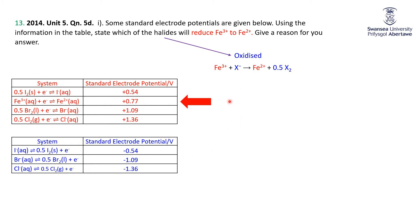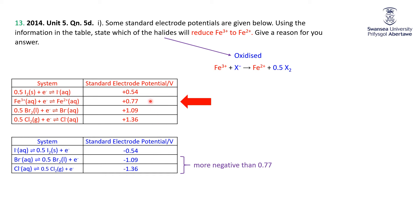Now we can put the reduction half equation potential for Fe3+ together with the halide oxidation potentials to give us the overall cell potential. We want to know which halides give a positive overall potential. The oxidation potentials are all negative and cannot be more negative than minus 0.77, because once they become more negative than that, the overall potential becomes negative. Bromide and chloride are more negative than minus 0.77 — for example, bromide gives minus 1.09 plus 0.77, which is negative.